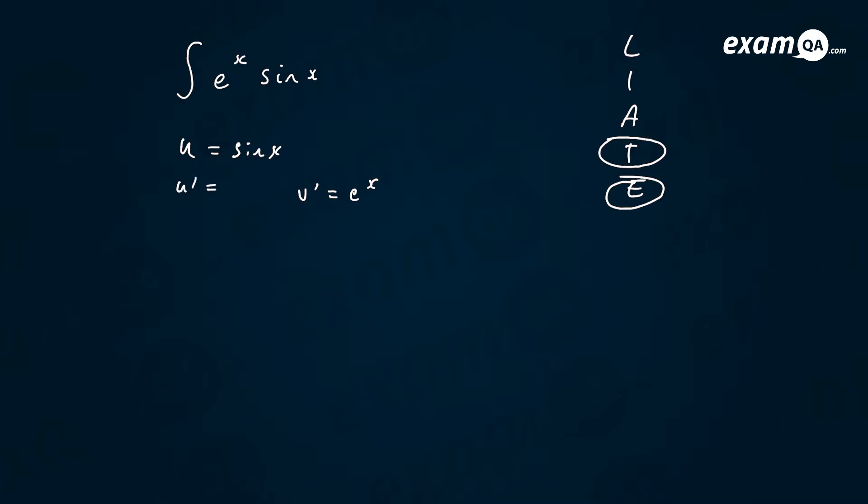Then we do u dash is cos x, v is e to the x. And then we just fill in the formula. So the integral of e to the x sine x equals uv minus integral of v du dx.